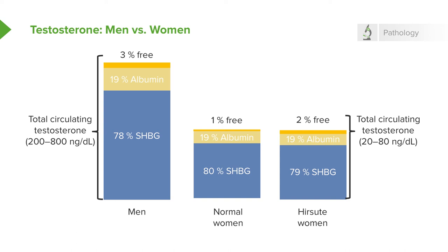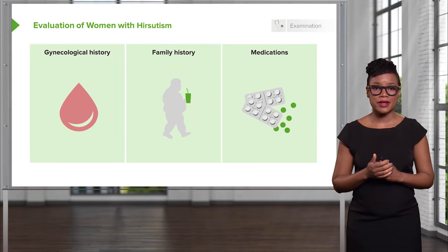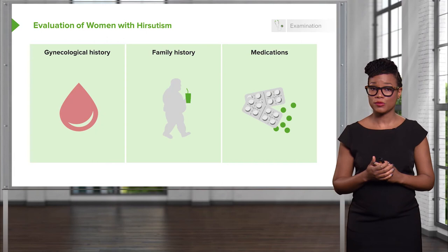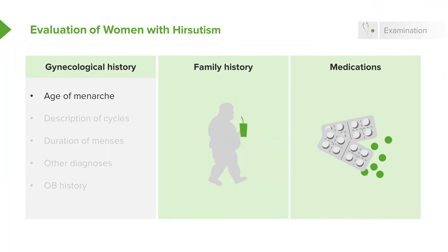Let's talk about how you would evaluate a patient who has hirsutism. First and foremost, you would like to get a thorough gynecologic history. This includes the age of menarche — the average age is 12. Then ask about a description of cycles: does she have oligomenorrhea or polymenorrhea? You also want to know the duration of menses, other diagnoses, and her obstetric history — gravida and para — how many times she's been pregnant versus how many times she's delivered.